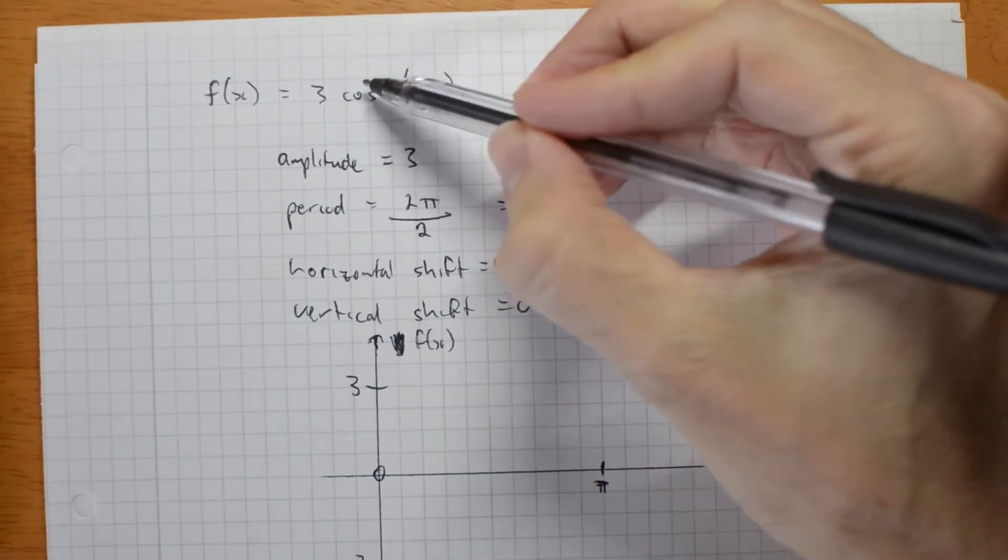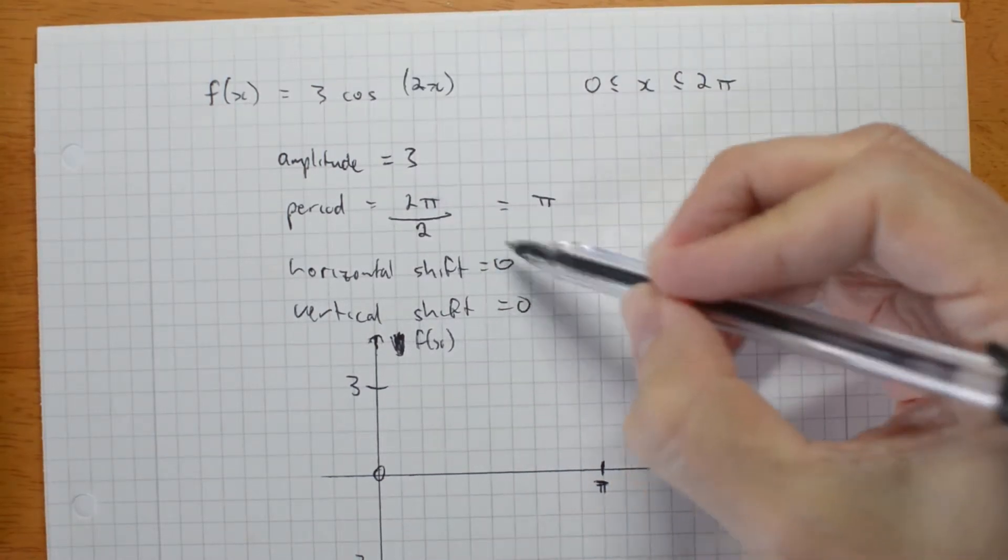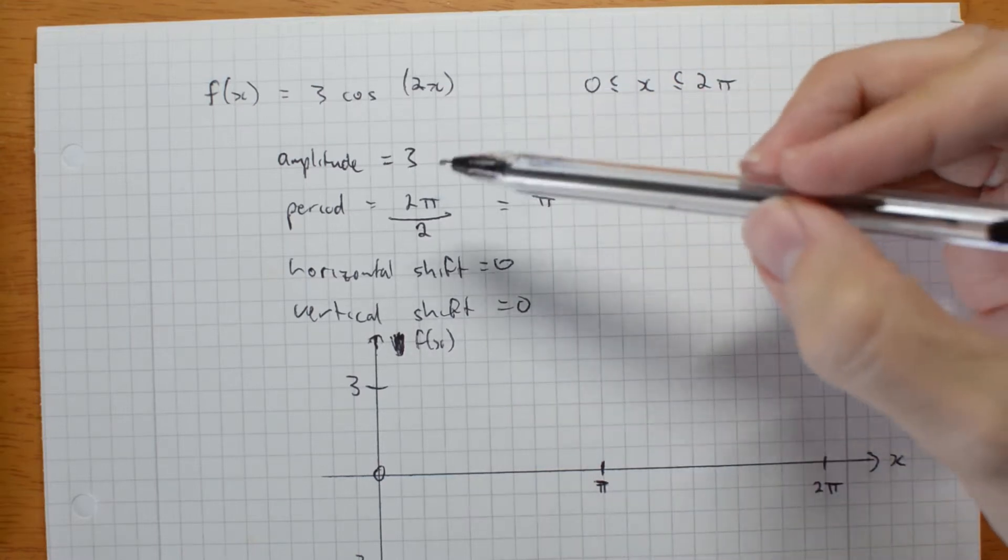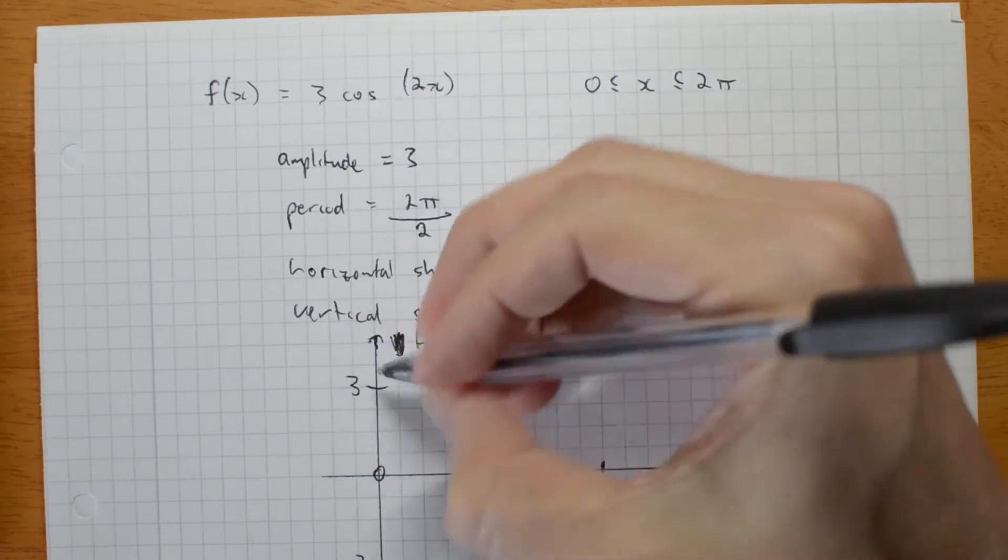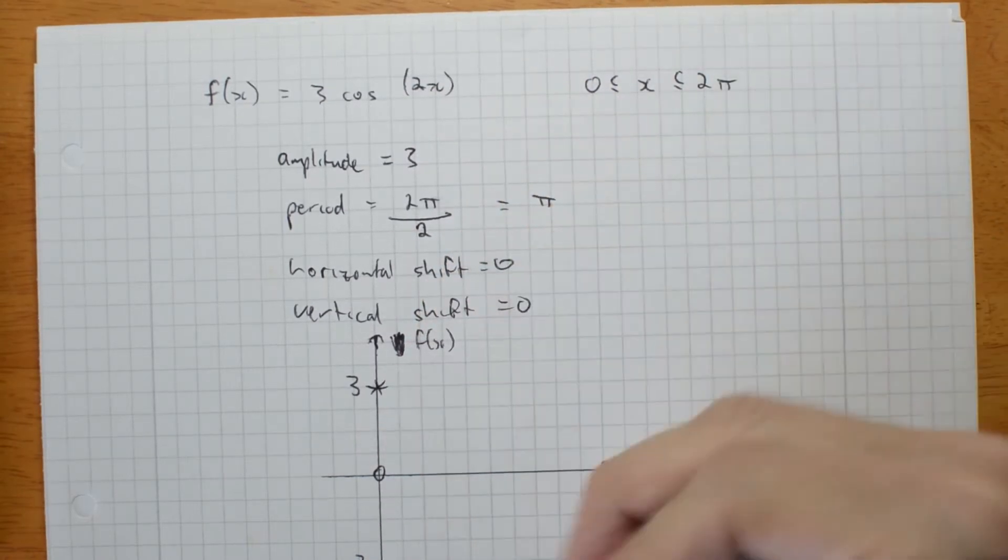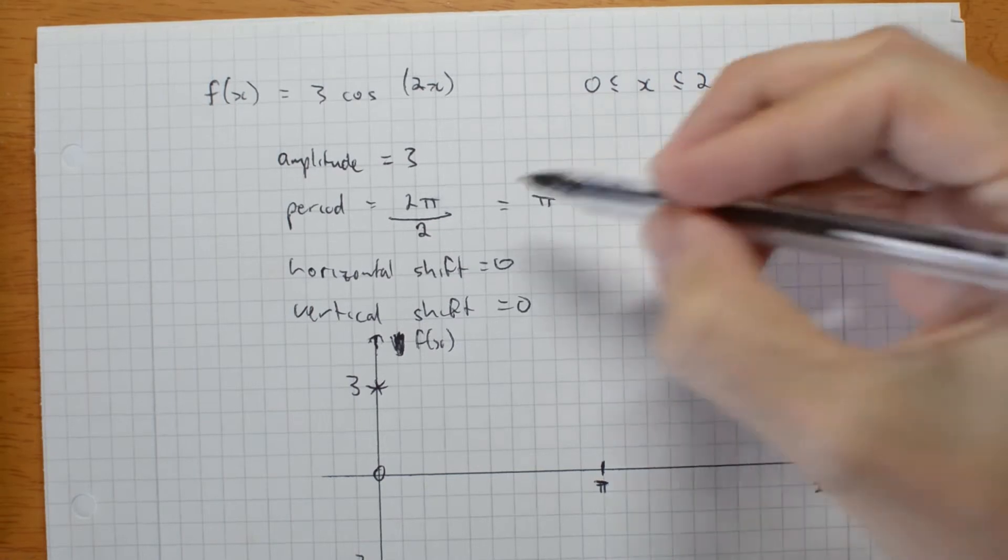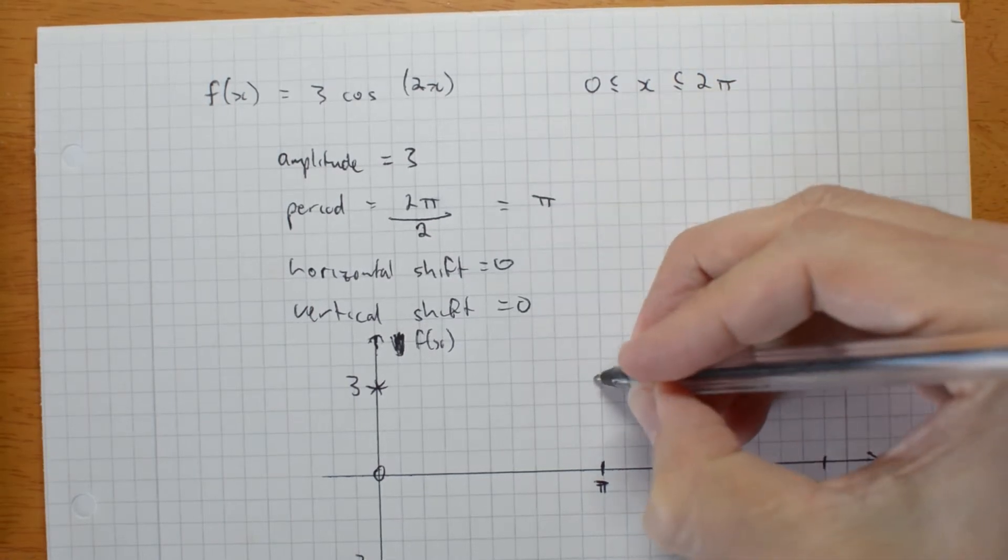It's a cos graph with no horizontal shift, and the amplitude is positive. So it's going to start at the top. It's going to go down and come up. Now, one period is pi, so it's going to be back at the top here.